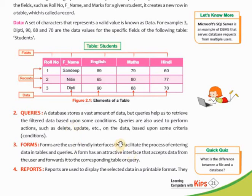Last is reports. Suppose I have stored thousands of records in my organization's database. Now someone comes to me and says, 'Sir, I need a list of 10th class students.' My database stores data of about 2000 students, but I need to show only the report of 10th class students. So whatever information of 10th class students is in my database, that is called a report. I will generate that report and give it to you, filtering out only the 10th class data from my whole database.